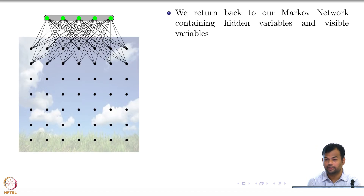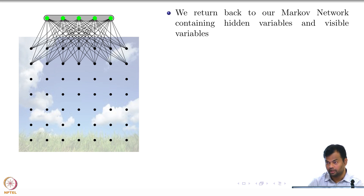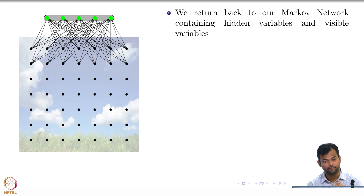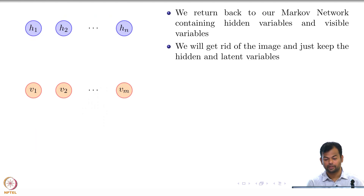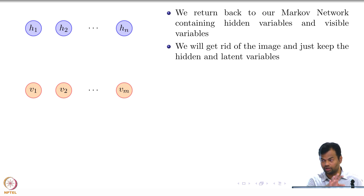We return back to our Markov network containing hidden variables and visible variables. We understand Markov networks, we understand what hidden variables are, we understand what visible variables are and how they connect with each other to form this Markov network. We will just focus on the random variables we care about: all n visible variables and m hidden variables.